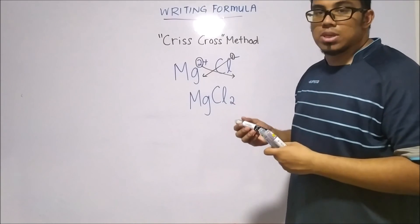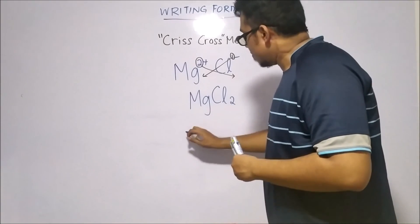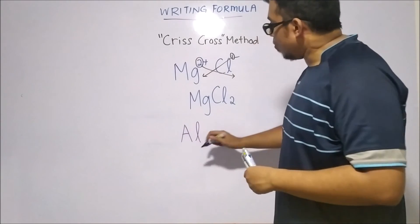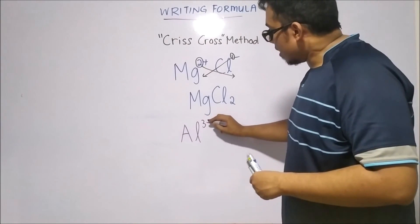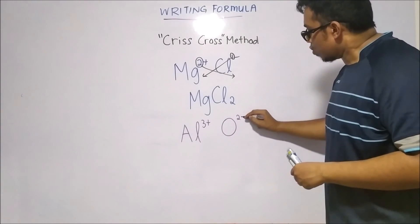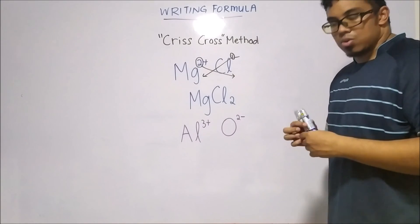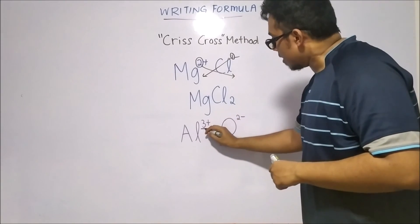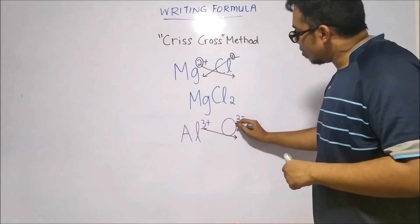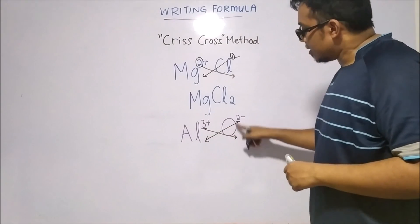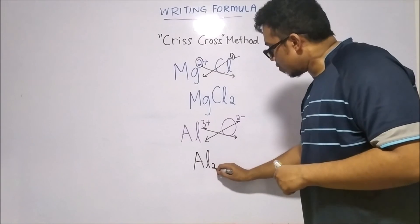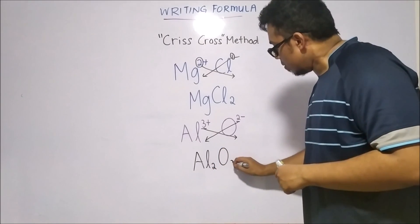I'll give you another example using aluminum and oxygen. Aluminum is in group 3. It will form 3+ ion. And oxygen is in group 6. It will form a 2- ion. So what do I need to do here? Same thing, I will take the number 3. I will bring it down. I will take the number 2. So there's a criss and a cross. And what I'll form is Al2O3.